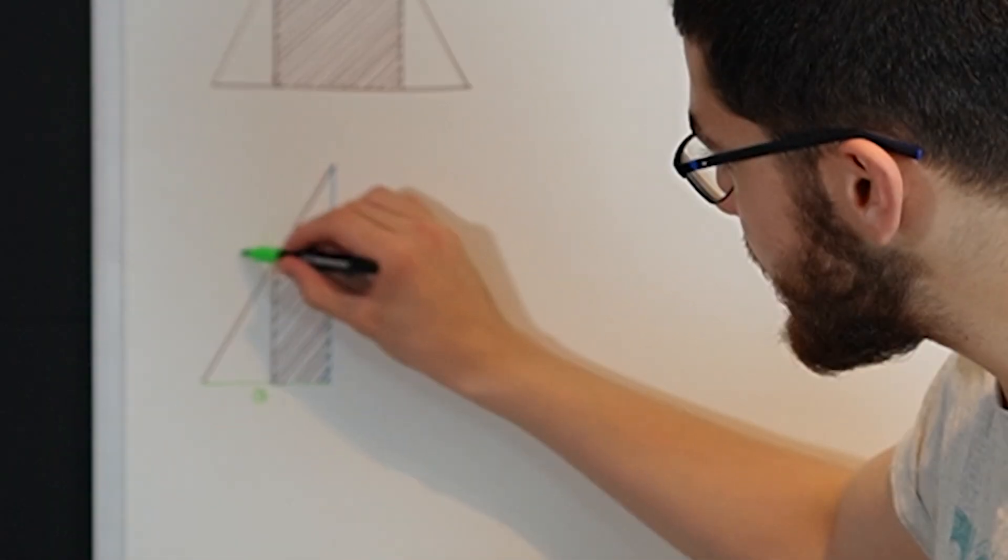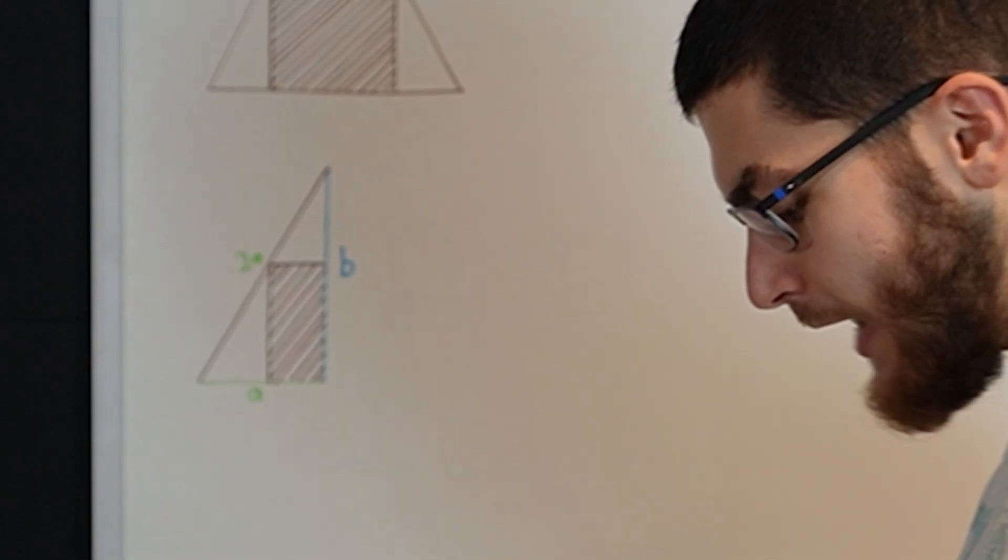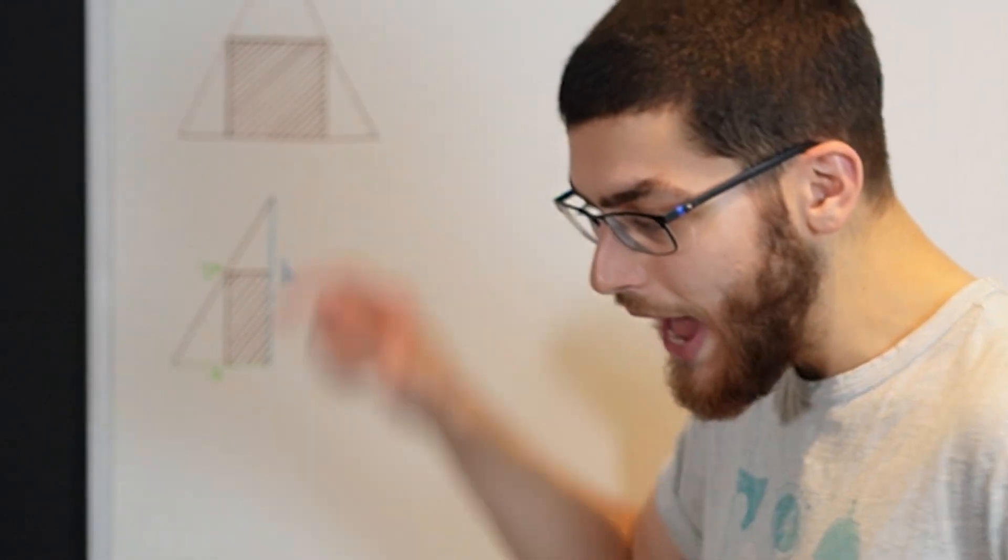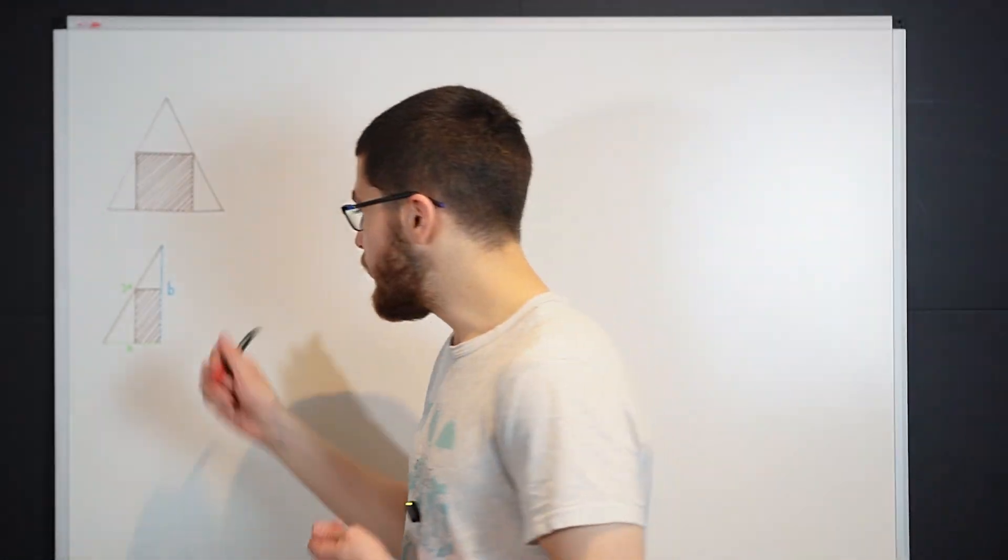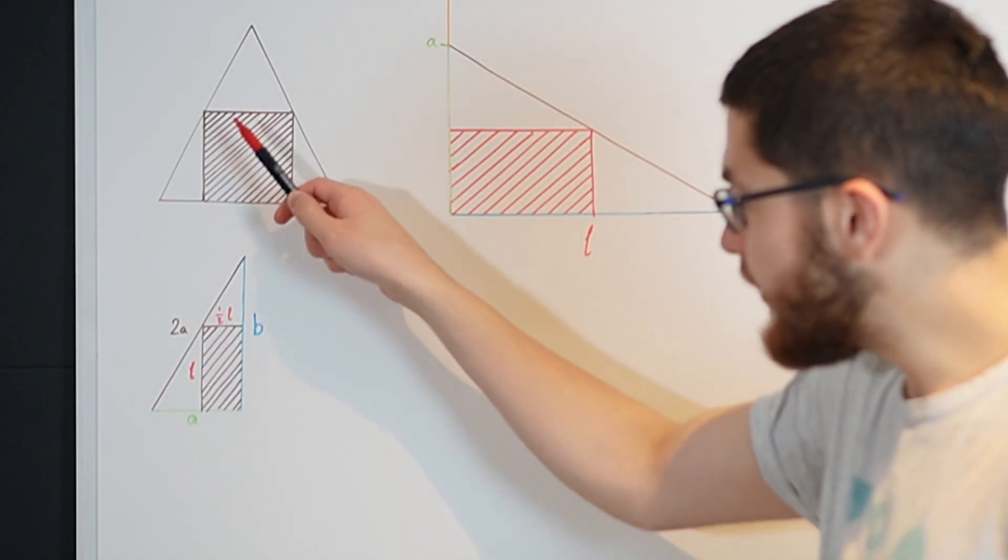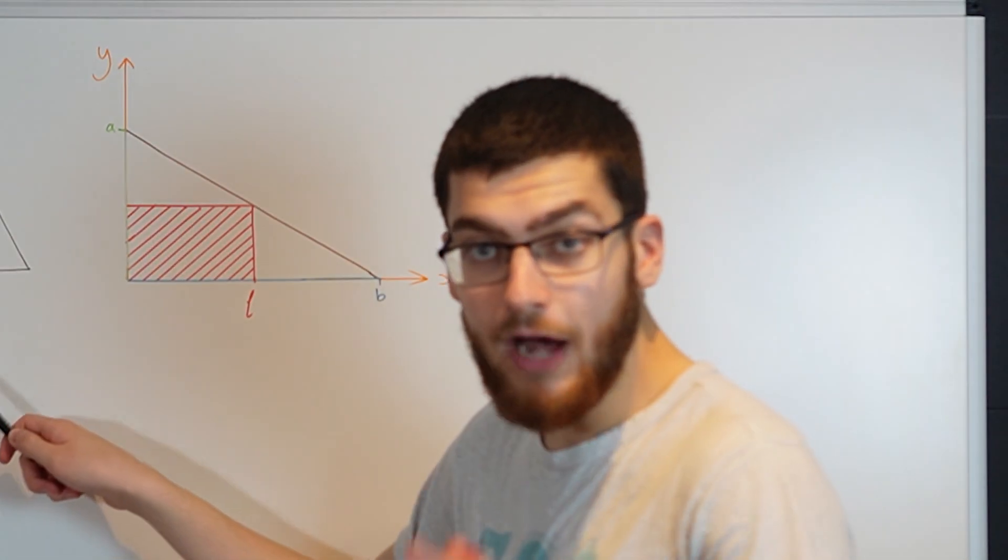Which is the same as this side here. So that's 2A and I'm going to label the length of the sides of the square as L. And lastly, if this square has side length of L, then the half side is gonna have a side length of half L.